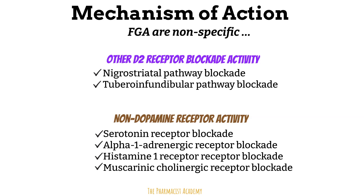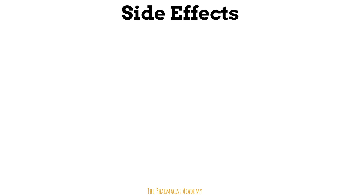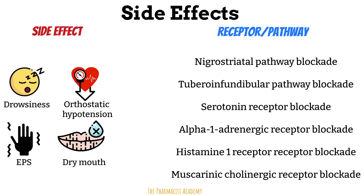Let's match side effects to the receptor or pathway responsible. Drowsiness or sedation is due to histamine receptor blockade — just like we see with antihistamines like Benadryl. Orthostatic hypotension — dizziness or fainting upon standing — is due to alpha-1 adrenergic receptor blockade, leading to vasodilation and reduced blood pressure.